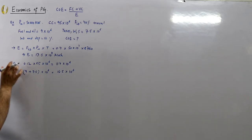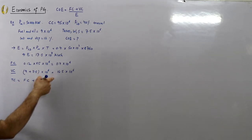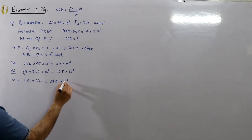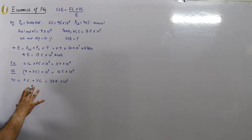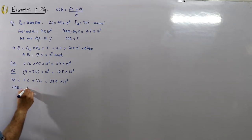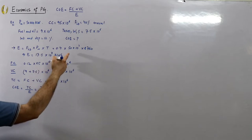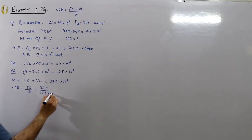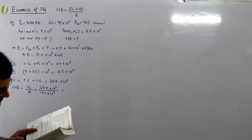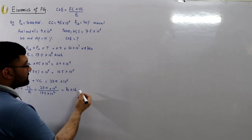Total cost = fixed charges + variable charges = 11.4 + 16.5 = 27.9 × 10⁶ rupees. The cost of electrical energy per unit = total cost ÷ energy units = 27.9 × 10⁶ ÷ 17.52 × 10⁷ = rupees 0.16, or 16 paise per unit.